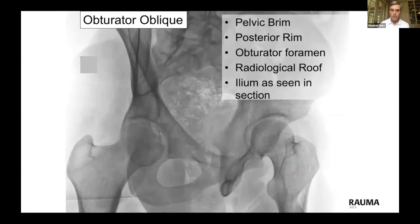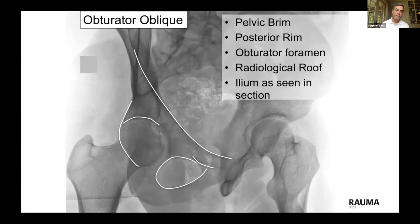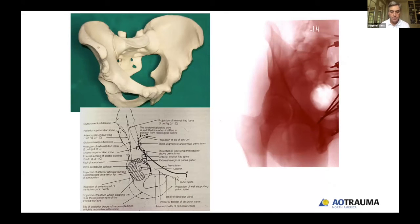The obturator oblique view is the other 45-degree oblique view we typically get. It gives us a nice look at the pelvic brim area, puts the posterior wall out in profile so we can see it nicely, and shows us a nice profile of the obturator foramen. It allows us to see the radiological roof in a wider area and gives us a thin section of the iliac wing as well. I'd encourage you to sit down with the pelvic model and a diagram and start drawing and thinking about where all the points are so you can then do this in the fracture situation to help with your preoperative planning.